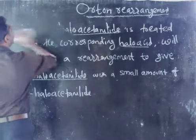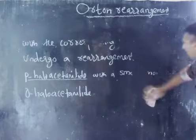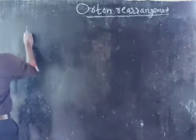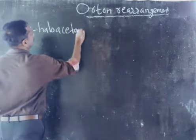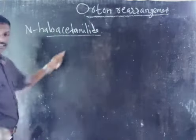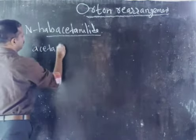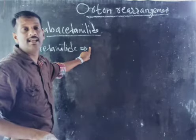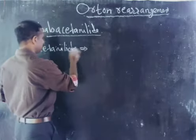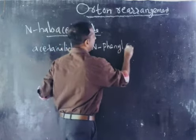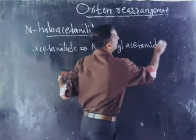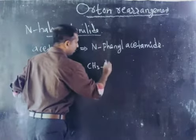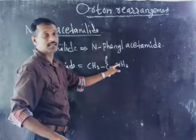When N-haloacetamide is treated with a haloacid, it will undergo a rearrangement. What is acetamide? Acetamide is CH3CONH2. This is acetamide.